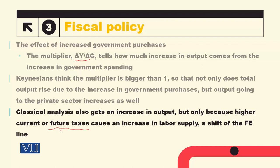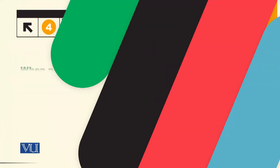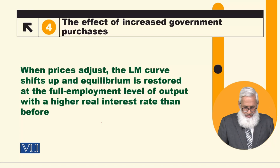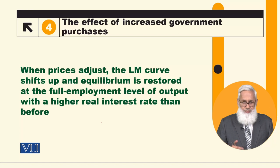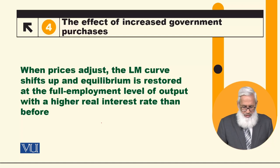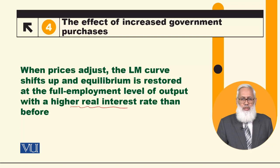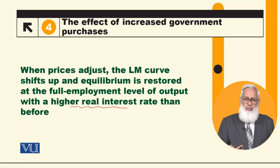In the Canadian IS-LM model, the FE line is not affected — only the IS curve shifts. When prices adjust in the long run, prices rise, reducing the real money supply, and the LM curve shifts. The equilibrium is restored at the full employment level of output with a higher real interest rate than before. So in the long run, output returns to its original level but the interest rate increases.